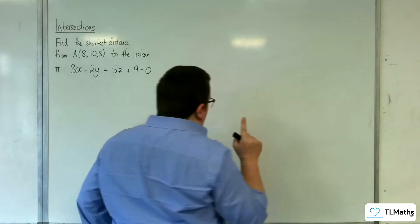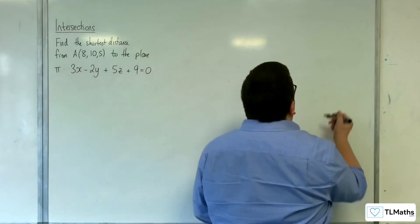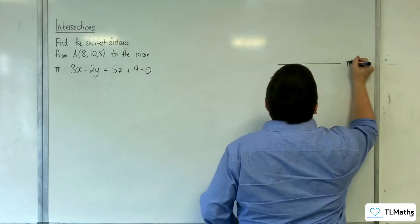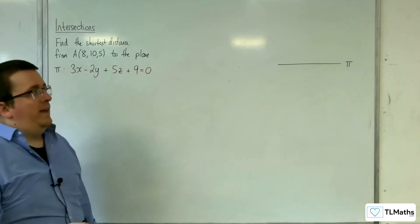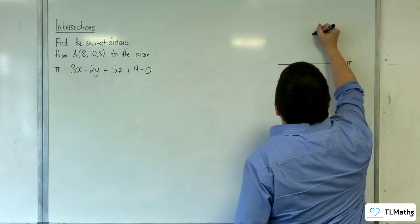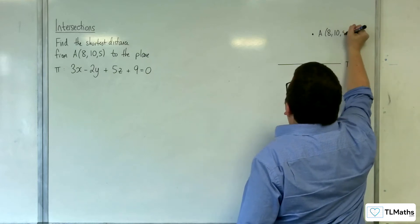So let's first of all draw a diagram so we can visualize what's going on. Now what we'll do is we will look at the plane side on. So there's the plane pi and here is the point A with coordinates (8, 10, 5).